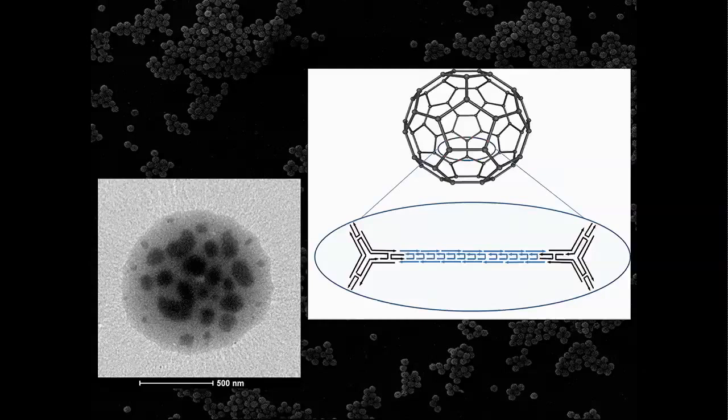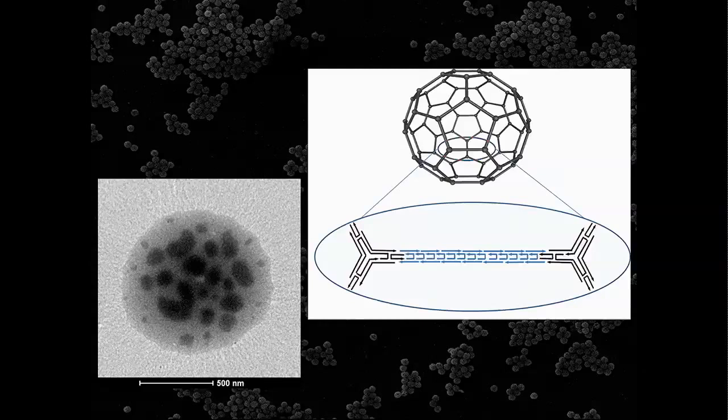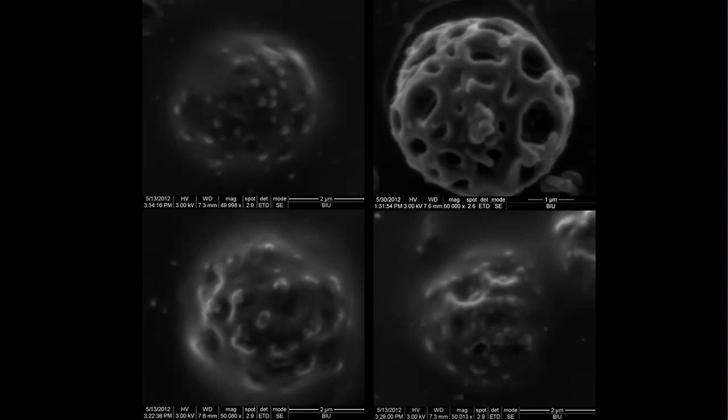Once we have created a Vicoi particle, we incubate it with live viruses. You can see on the right a lot of white bulbs on the surface of a single Vicoi trap — one is circled for you. What you're seeing is tens of viruses captured on the surface of a single trap. What you're not seeing is that there are already thousands — potentially hundreds of thousands — of viruses inside a single trap. Here are a few more pictures of viruses captured by our traps, and if I may say so, this is really exciting science — this has never been done before.